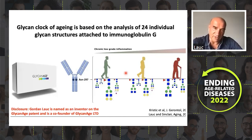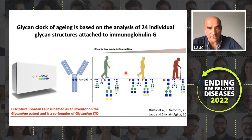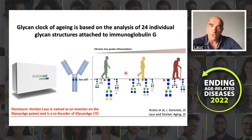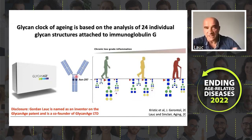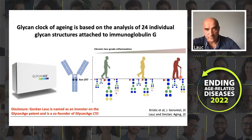I am one of the co-founders and co-inventors of this test, and I'm heavily conflicted here, so please use your common sense in judging what I'm saying. What we know is that young people have glycans which suppress inflammation, and with age come more and more glycans which promote inflammation, driving this cycle of inflammaging — which is both a biomarker of aging but also a driver of aging.